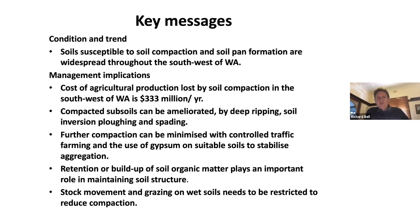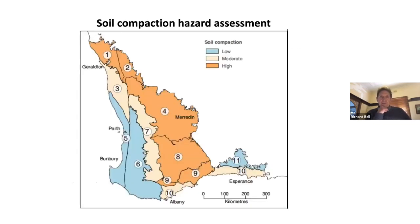A lot of what we deal with in relation to compaction is on cropping soils, but it is also an issue in horticulture, and in livestock or mixed farms where you've got stock movement and grazing — particularly in winter when soils are wet. DAFWA has put out a hazard assessment for compaction, showing that the northeast and southeastern wheat belts have large proportions of the landscape susceptible to compaction. Other parts of the southwest have moderate or low hazard, meaning a smaller proportion of the landscape is likely to be affected.